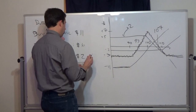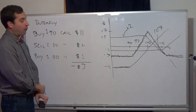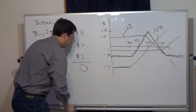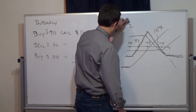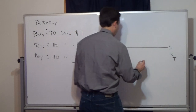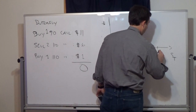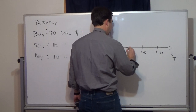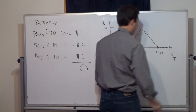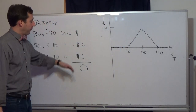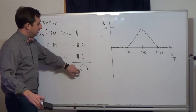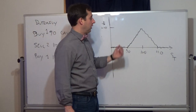Now let's change the numbers — say the 90-call costs $6 and the 110-call costs $1. The cost is now $12 and we earn $12, so net it costs zero dollars to put on. The payoff is: zero below $90, rises to +$10 at $100, and decreases back to zero at $110. This is an arbitrage — it costs nothing to enter, there's some probability of gain, and no probability of loss.